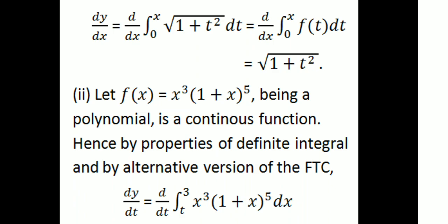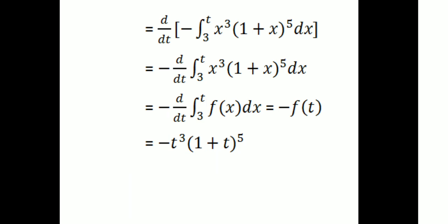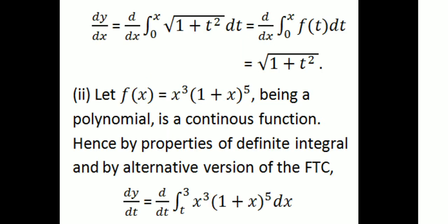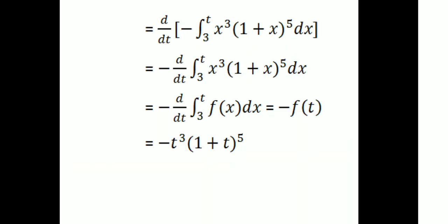Second question: y equals the integral from t to 3 of x cubed times (1 plus x) raised to the 5th power dx. Let f of x equal to x cubed times (1 plus x) raised to the 5th, which is a polynomial and therefore a continuous function. By properties of definite integrals and the alternative version of the Fundamental Theorem of Calculus, dy by dt equals minus d by dt of the integral from 3 to t of x cubed times (1 plus x) to the 5th dx, which equals minus f of t, that is minus t cubed times (1 plus t) raised to the 5th.